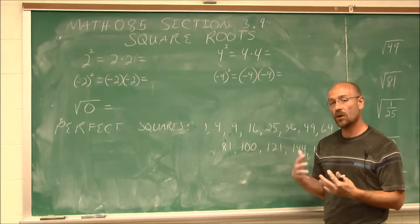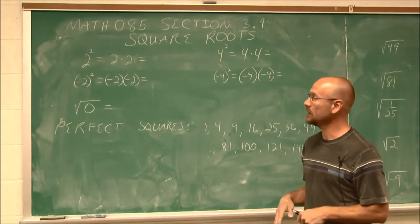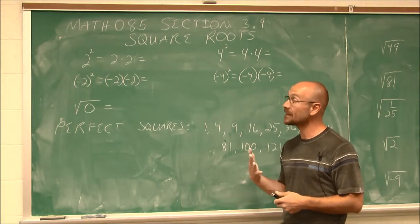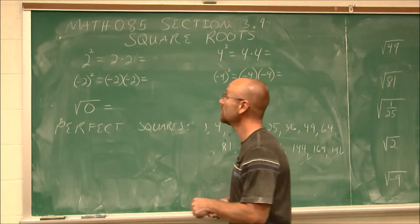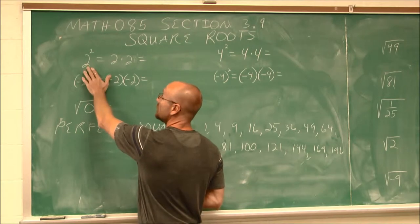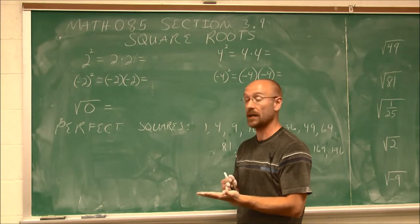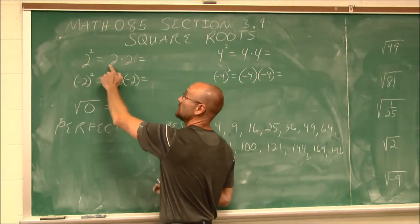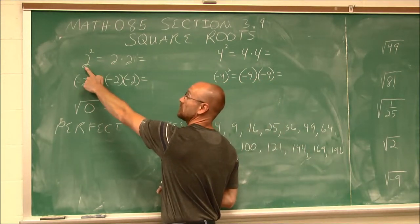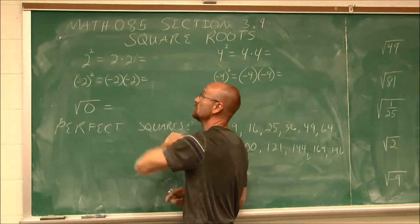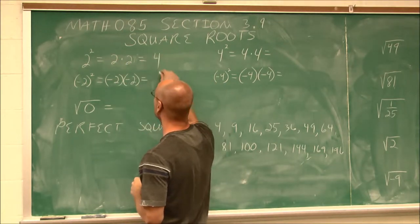Now, before we discuss what a square root is, let's define what a square is. And that's something we should be familiar with at this point. Here in this example, we have 2 squared. And to square something means to multiply it by itself. So 2 squared just means take the base of 2 and multiply it by itself, 2 times 2. Well, 2 times 2 is 4.